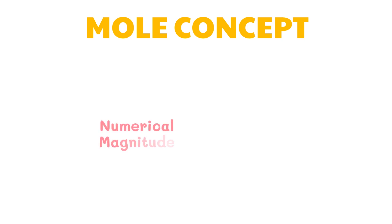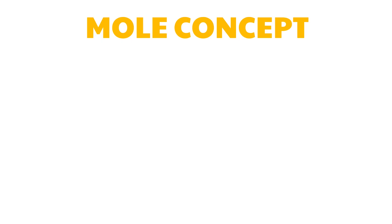Any measurement can be broken down into two parts: the numerical magnitude and the units that the magnitude is expressed in. For example, when the mass of a ball is measured as two kilograms, the magnitude is two and the unit is kilogram.